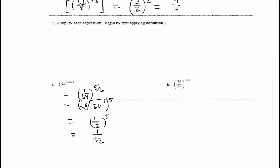In part B, we have 36 over 25 to the negative 1 half. Using definition 2, we flip the fraction to get 25 over 36, raised to the positive 1 half. We write this as the square root of 25 over 36. The square root of 25 is 5 and the square root of 36 is 6, so the answer is 5 sixths. That's our video on simplifying numerical expressions containing rational exponents.